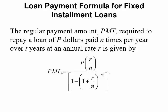Your regular payment amount is equal to P times R divided by N, all of that divided by 1 minus, in parentheses, 1 plus R divided by N, raised to the negative N times T power. Have your calculator ready because I'm going to show you how to use it to do all of this.